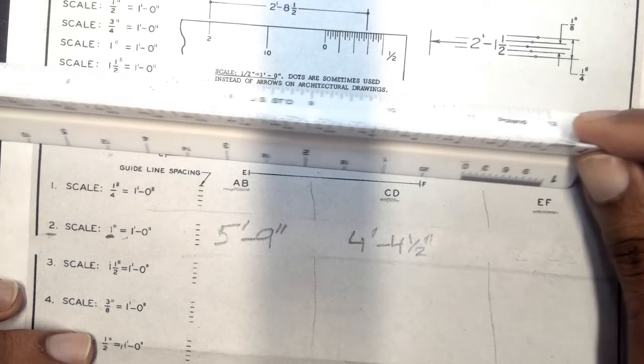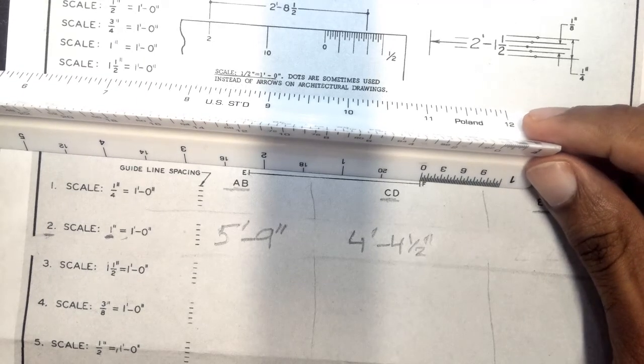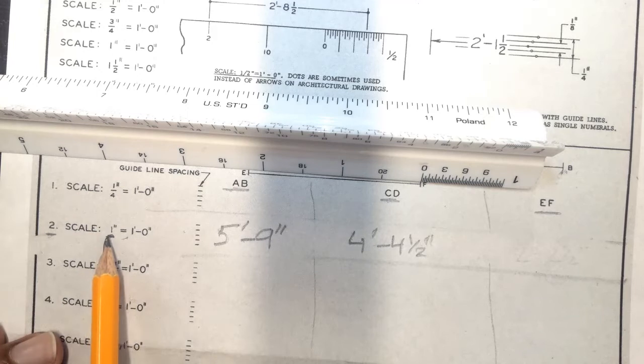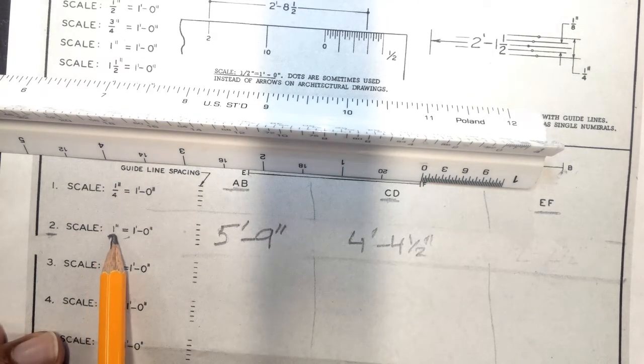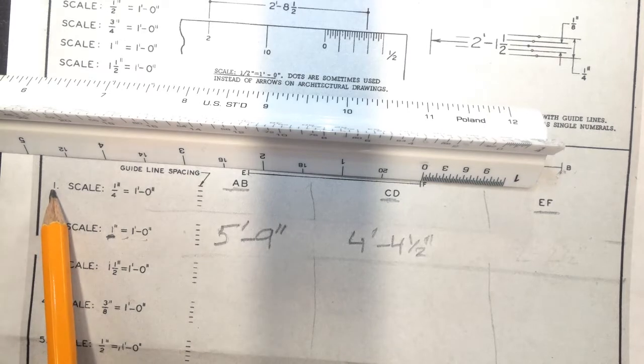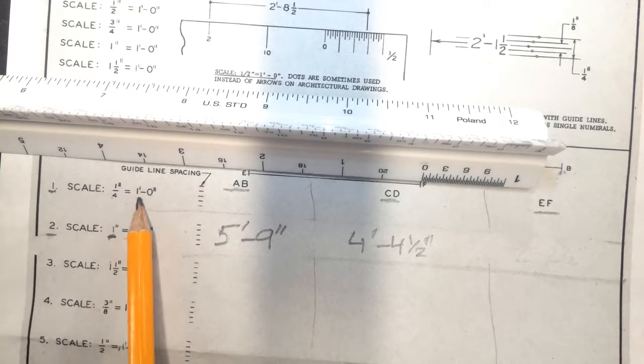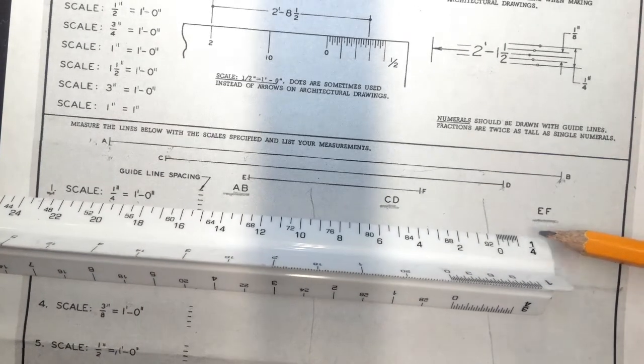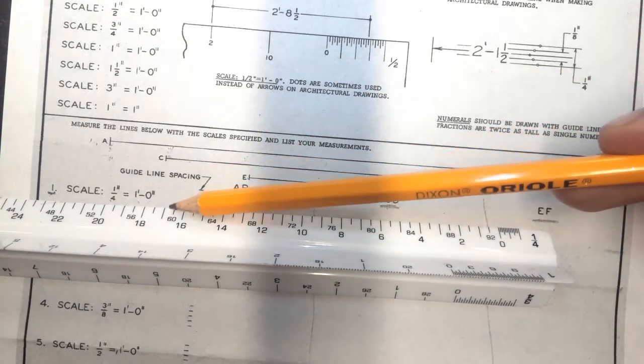This time, for the last time, we're going to be doing it as slowly as possible. Again, first thing we're doing is identifying what scale we're on. 1 inch equals 1 feet. For example, question number 1, 1/4 inch equals 1 feet. So we're going to switch to this side where it says 1/4 inch. This corresponds to the 1/4 inch that is required for the first problem.